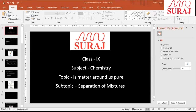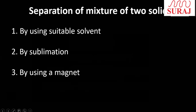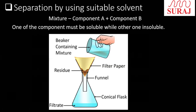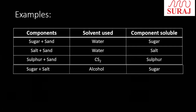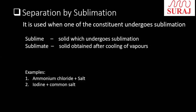In the last class, we discussed the separation of a mixture of two solids using three methods. First, using a suitable solvent in which one component is soluble and the other is insoluble. Second, separation by sublimation, where one component undergoes sublimation and the other does not, so we can separate them.